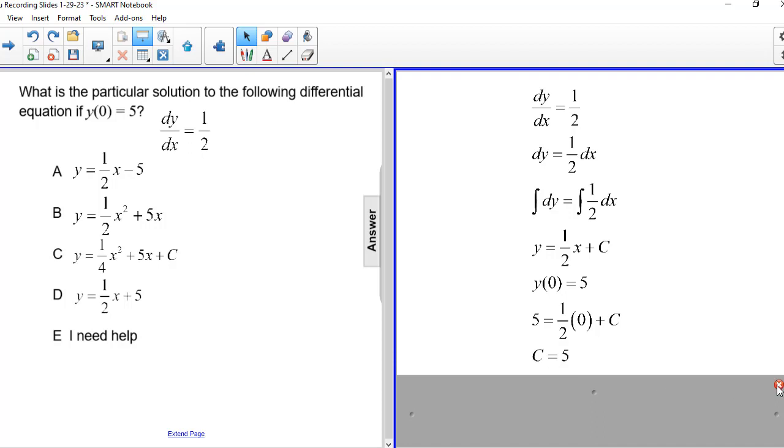Plugging that into my general equation, we have y is equal to 1 half x plus 5, which is answer choice D.